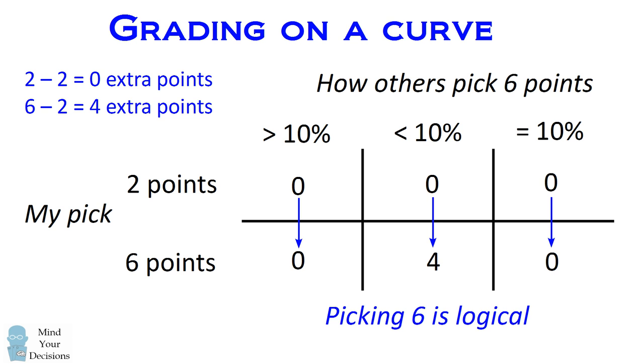picking 6 is always at least as good as picking 2. So in this case, picking 6 is the logical choice, and it's what's known as a weakly dominant strategy. So when you have a weakly dominant strategy, you're going to want to play it.